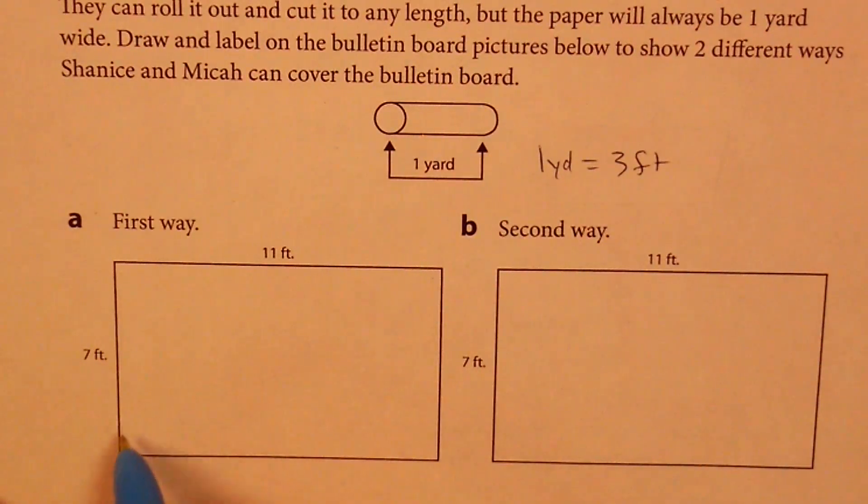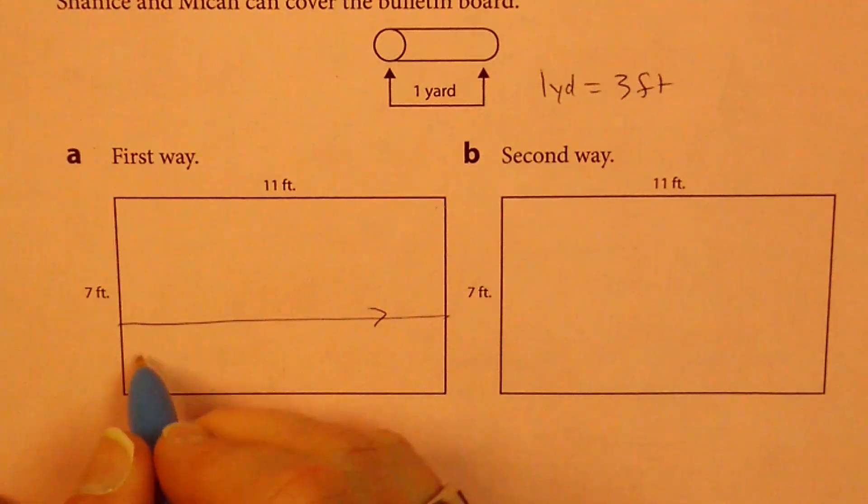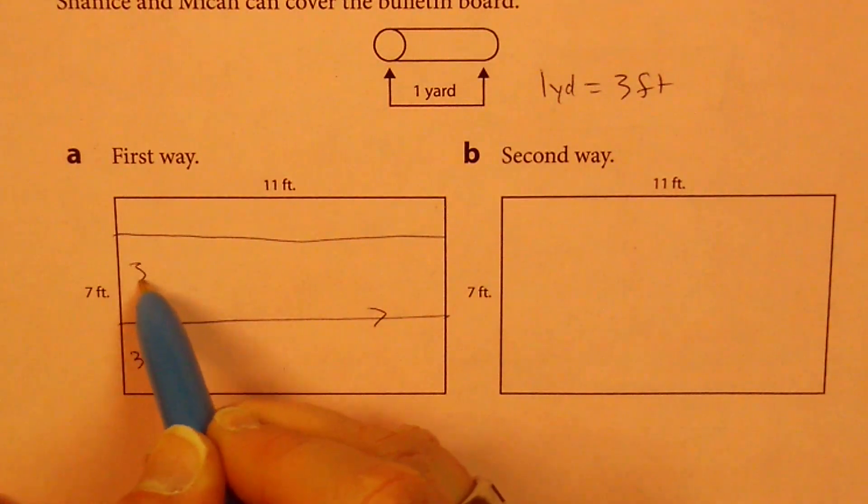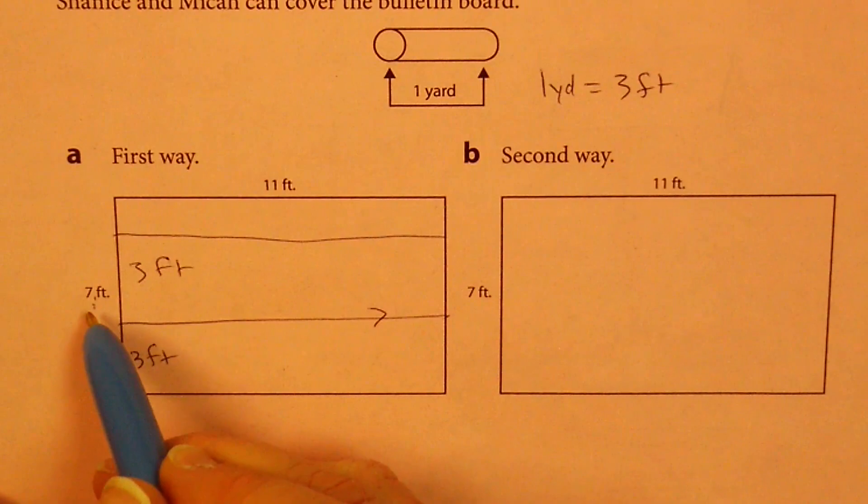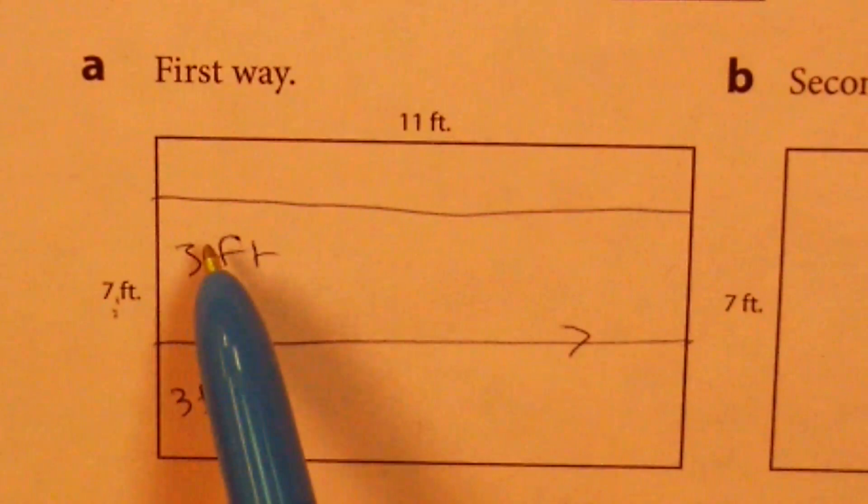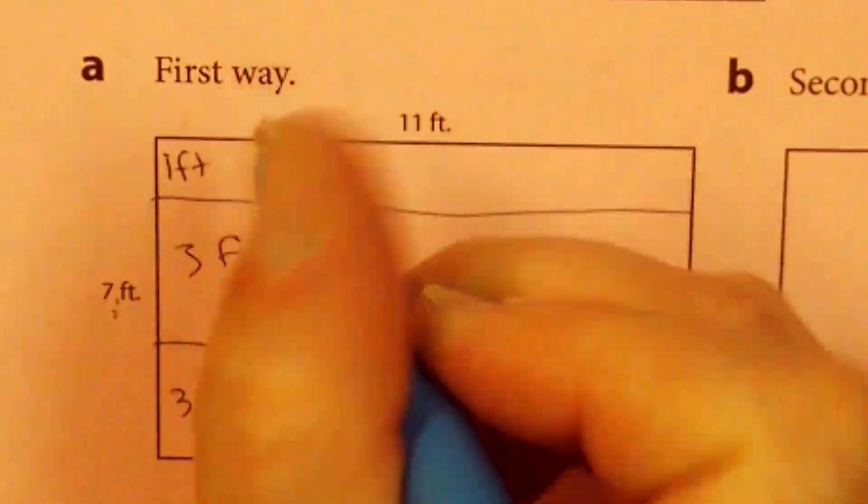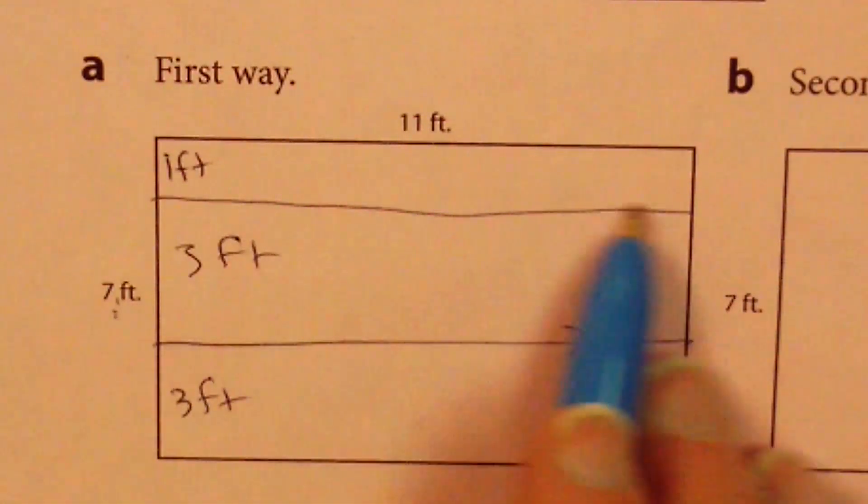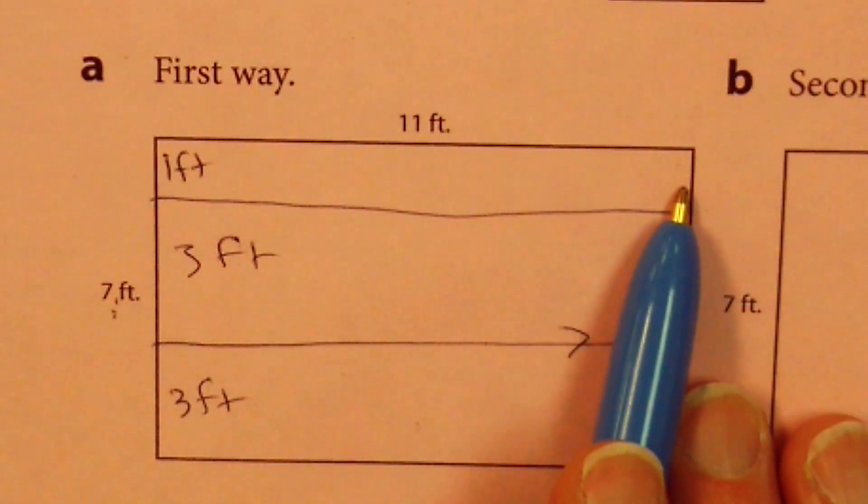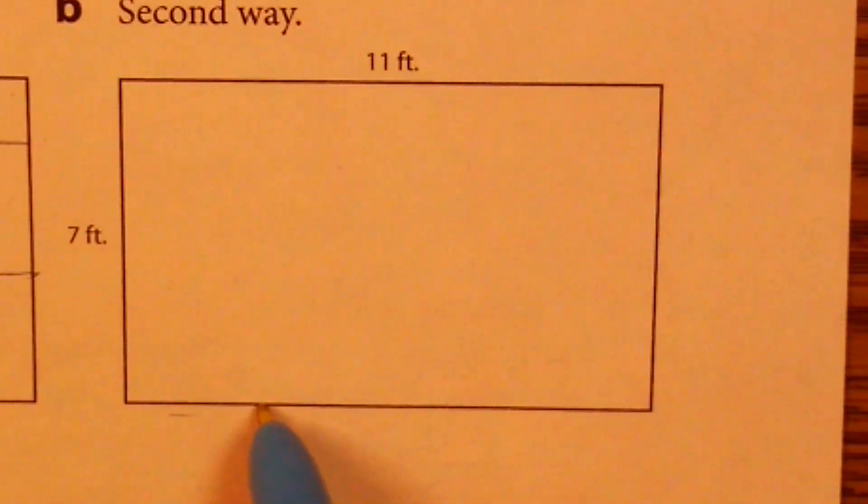So two different ways that Shanice and Micah can cover the bulletin board. So let's say that we did, we maybe made the paper go across this way. We roll it across in that direction. Well, I can do three feet. But then I may have to roll more paper and do three more feet. How many am I trying to get to? I'm trying to get to seven, aren't I? So I'm still going to need another roll of paper because even if I do two stacks and I roll them out, I can only get six feet high. I still have this one foot left over. So I'm still going to need to roll out another sheet or another length of paper off of that tube.